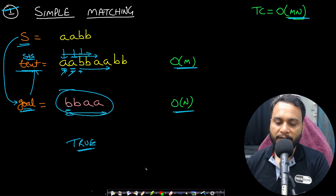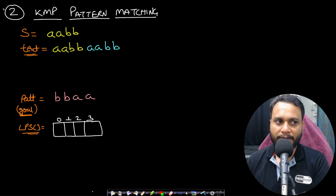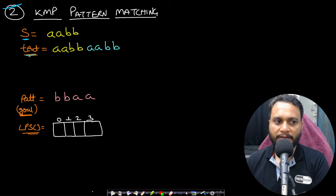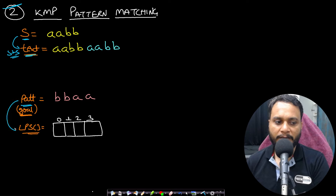We can improve this to linear time complexity using the KMP pattern matching algorithm. We take s as 'aabb', form the text as s+s giving 'aabbaabb', and the pattern is goal which is 'bbaa'. In KMP, we first form the LPS array for the pattern.